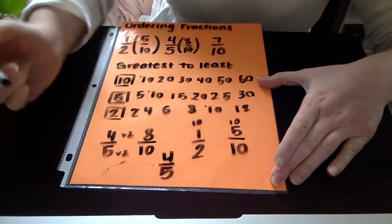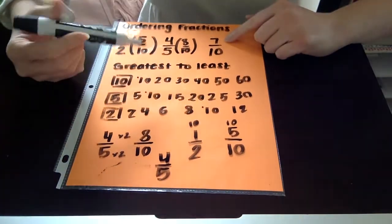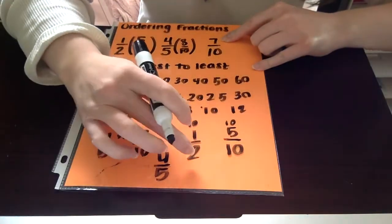4 fifths. Alright, and then I'm looking at my next one, 7 tenths. 7 comes right after 8, and that's larger than 5, so I'm going to put 7 tenths next.